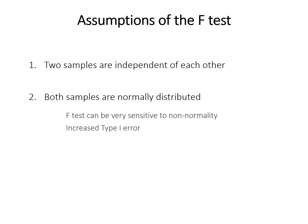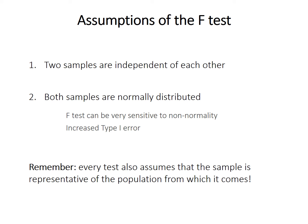Type 1 error is when you reject the null hypothesis if it is in fact true. Also remember that all of these tests assume that the sample that you're working with is representative of the population and not biased in whatever way.